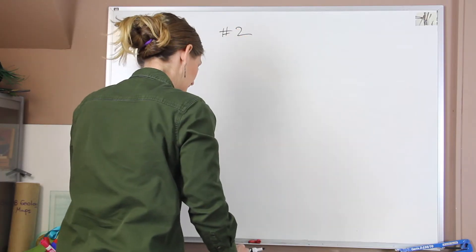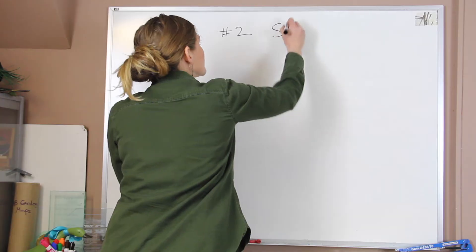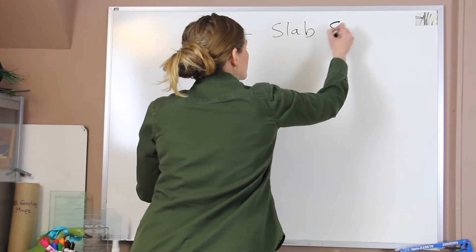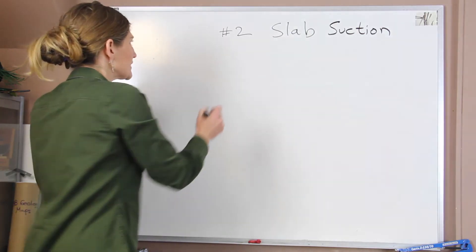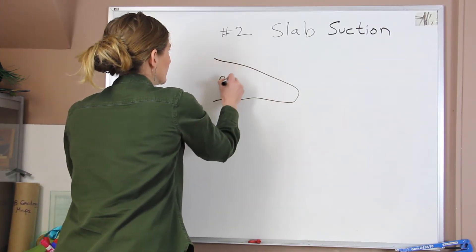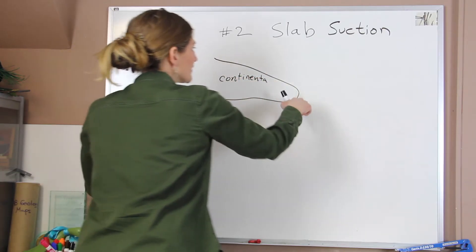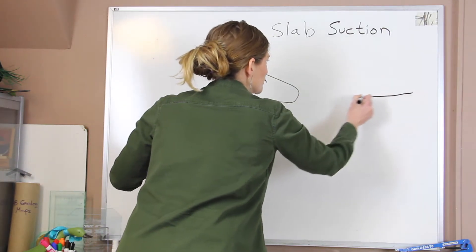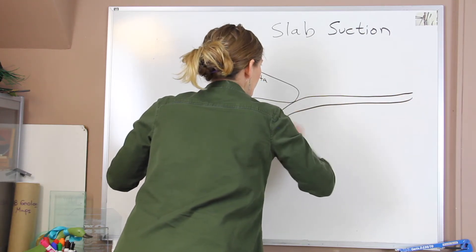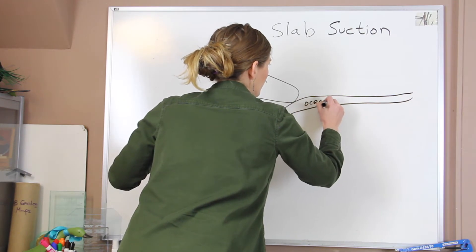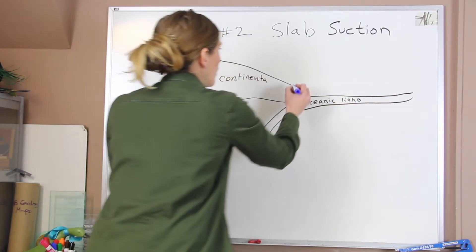Now the second idea ties along with this one. And this is called slab suction. Okay, so now in this case, we again have our continental lithosphere. And we're having this subduction zone. So we have our oceanic plate coming down.